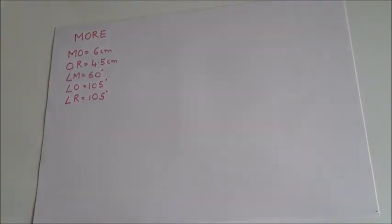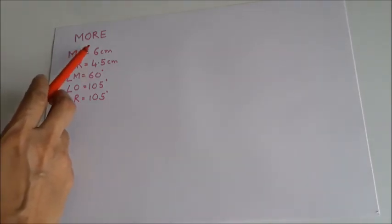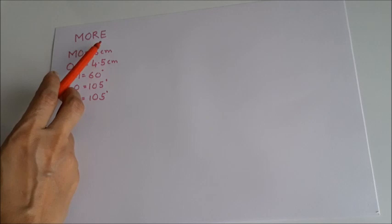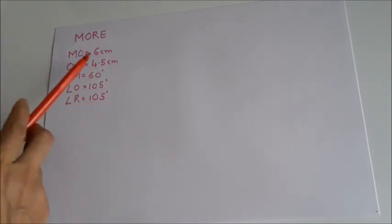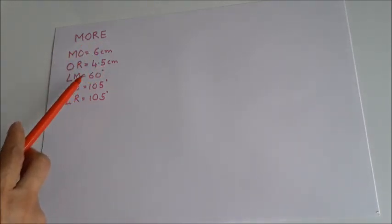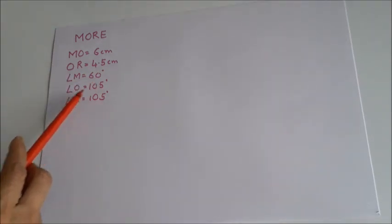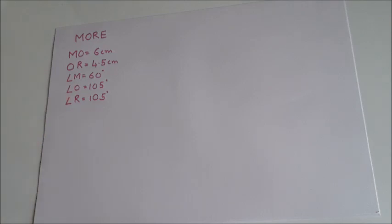In this video we will learn how to construct a quadrilateral when two sides and three angles are given. We should construct quadrilateral MORE where MO is 6 cm, OR is 4.5 cm, angle M is 60 degrees, angle O is 105 degrees, and angle R is 105 degrees.